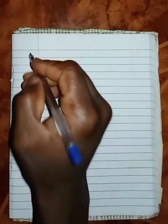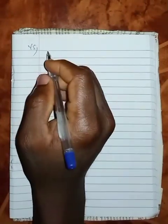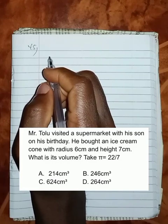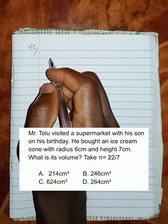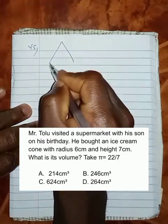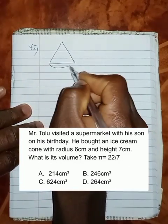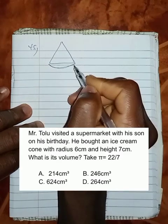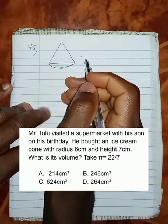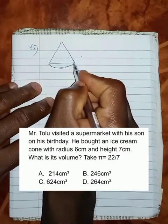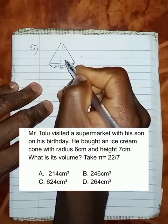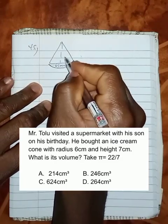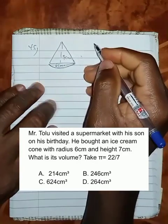Question 45: Mr. Tolu visited a supermarket with his son on his birthday. He bought an ice cream cone with radius 6 cm and a height of 7 cm. The question says we should find the volume.